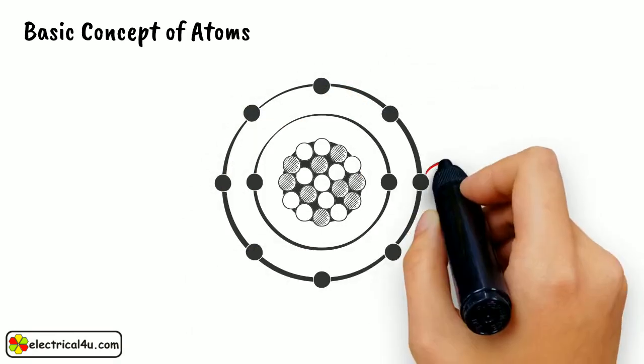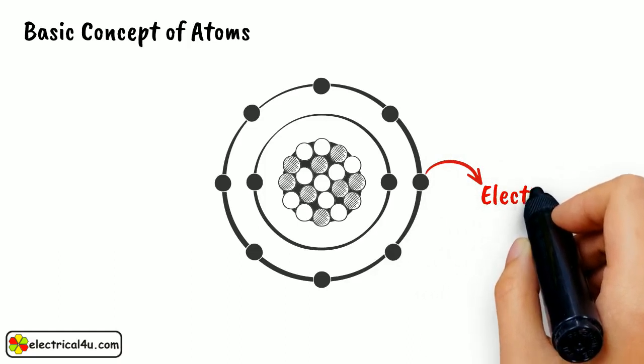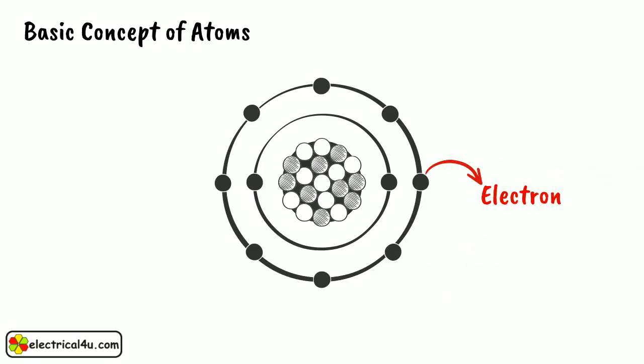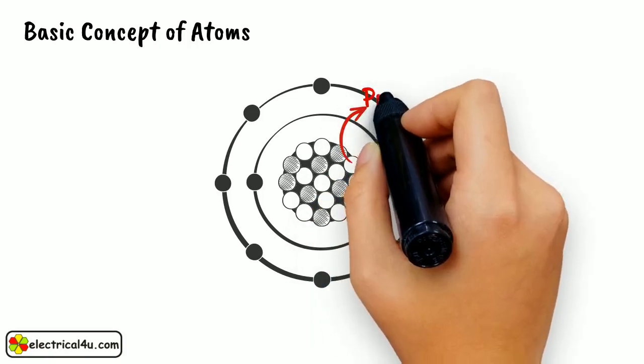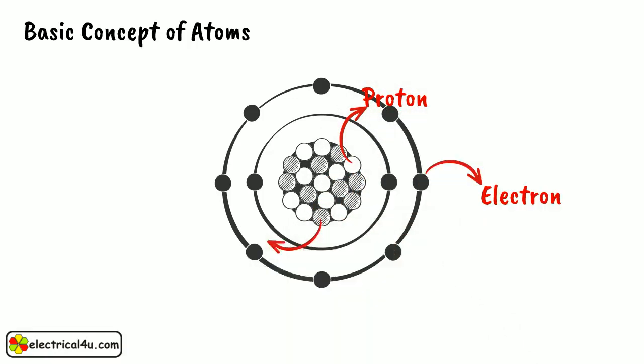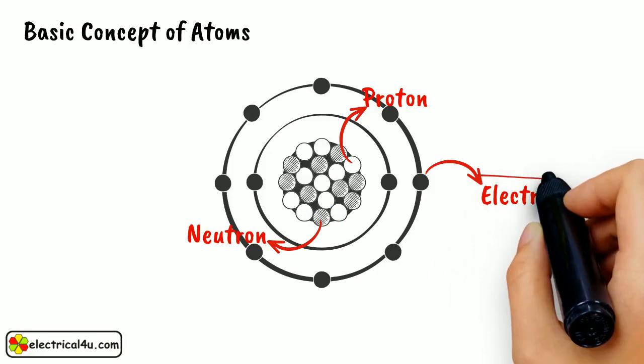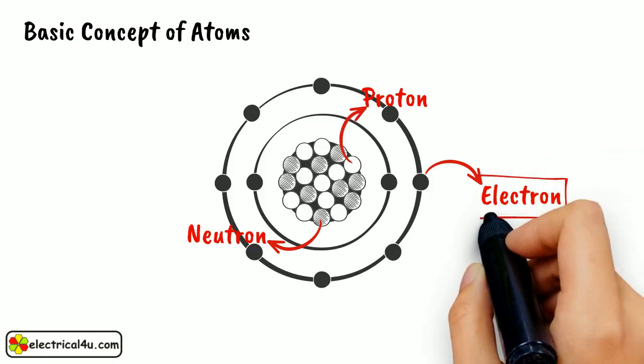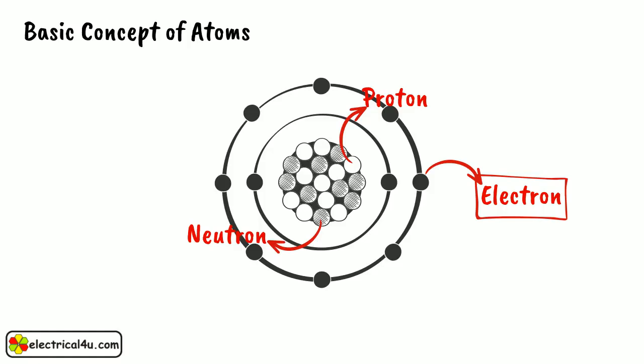An atom consists of negatively charged electrons surrounding a nucleus that contains positively charged protons and electrically neutral neutrons. The protons and electrons are the key factors of electricity. Atoms are basic units of matter. Matter means any physical substance that has mass and volume.